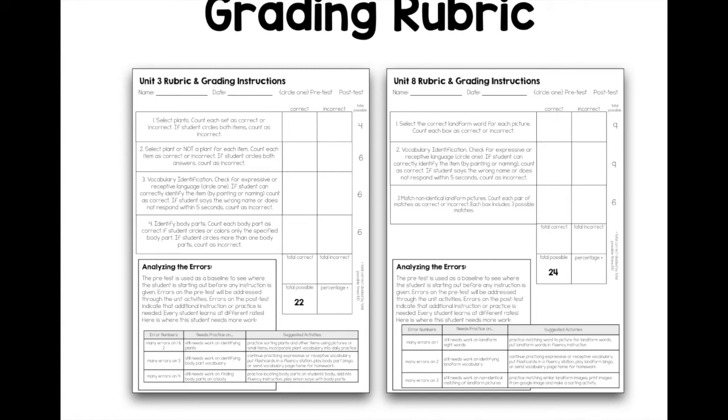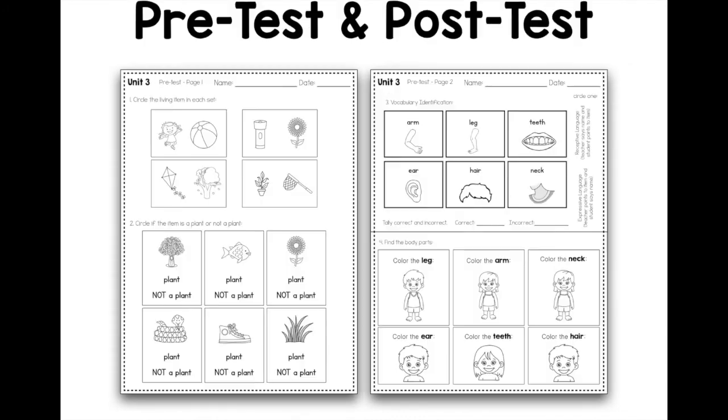It'll show you, depending on how the student errors were allocated, what type of suggested activities are follow-up. When your principal or administrators ask for data-based instruction, here you go: data-based instruction. This is the data you're using, and doing those follow-up activities based on their errors, you're using that data to drive your instruction. This is really key.